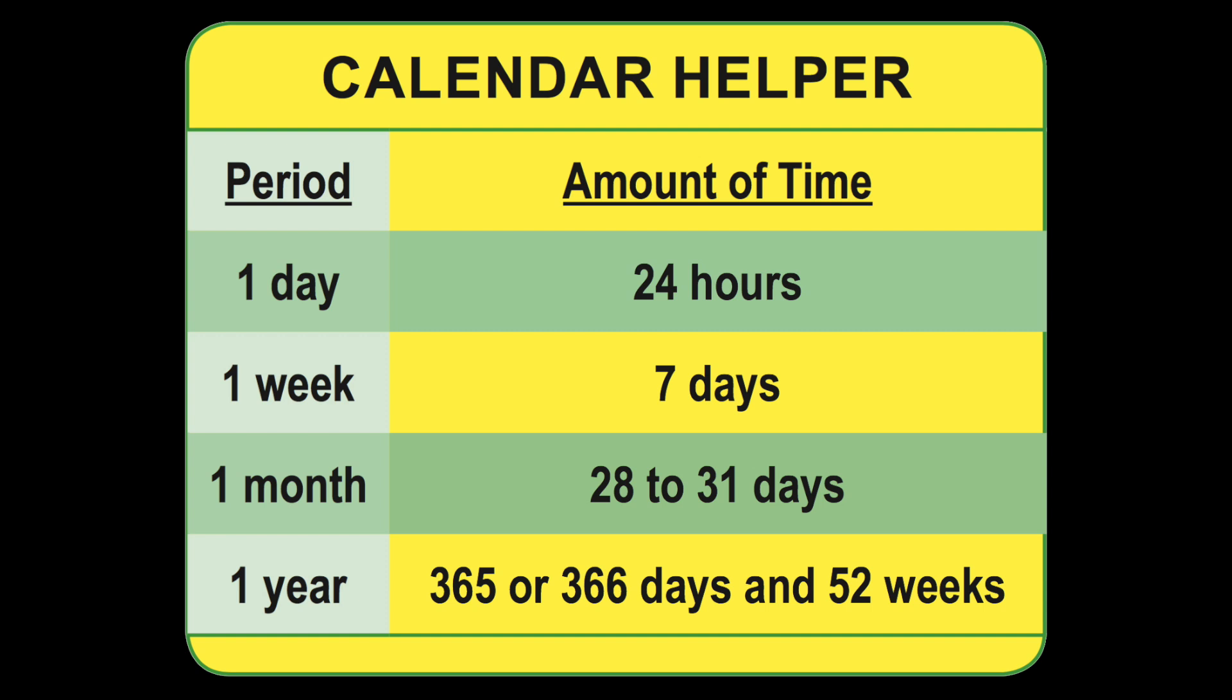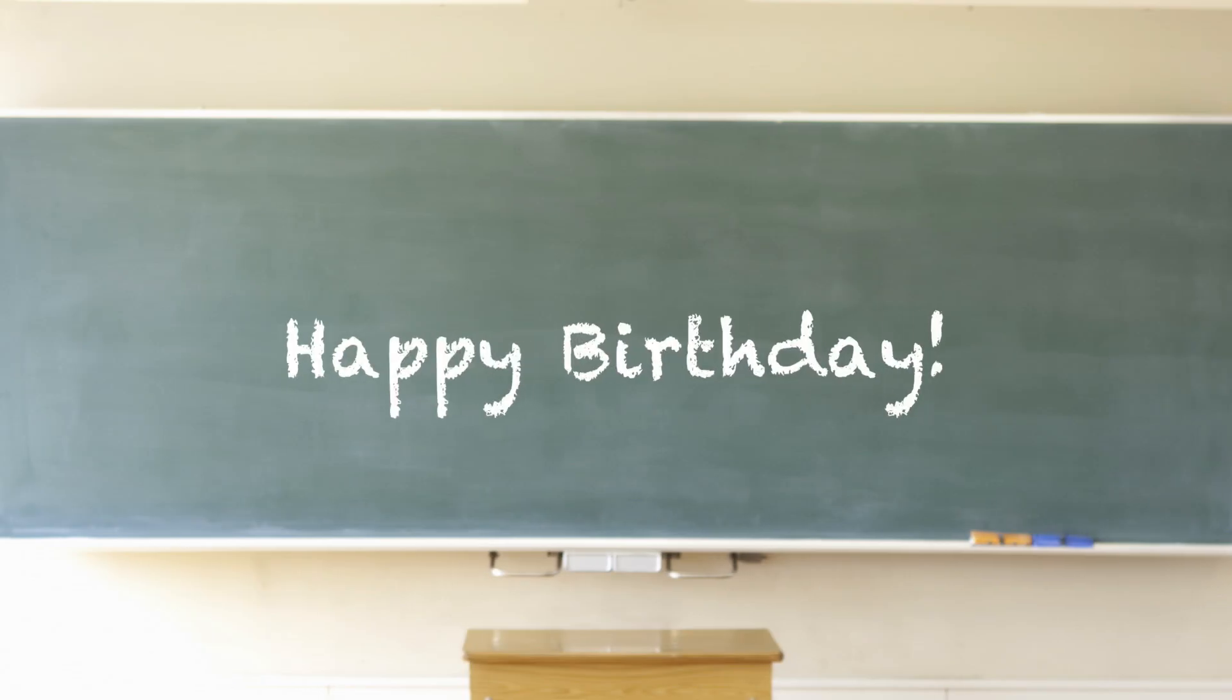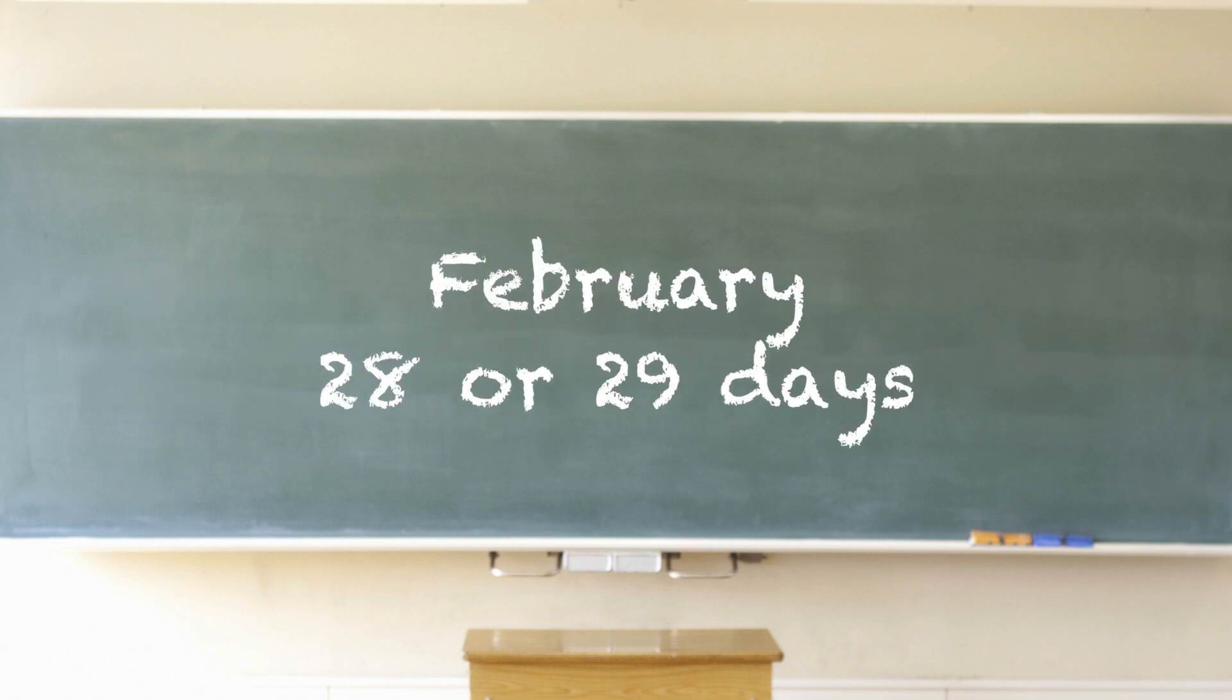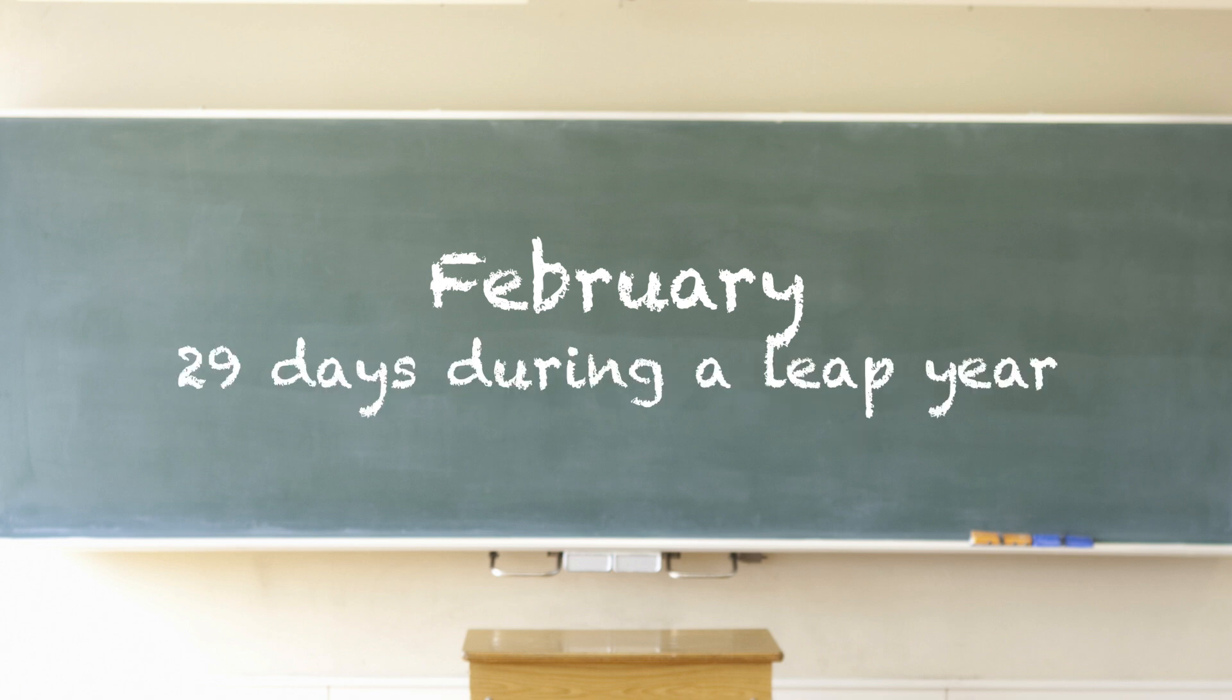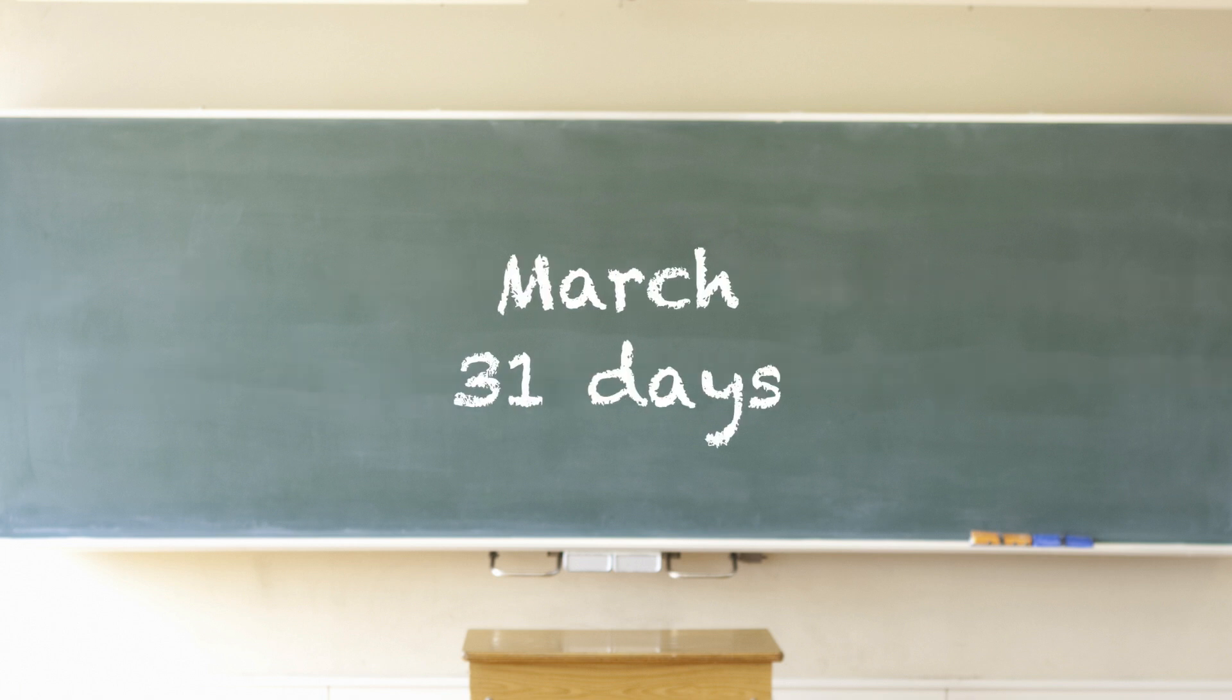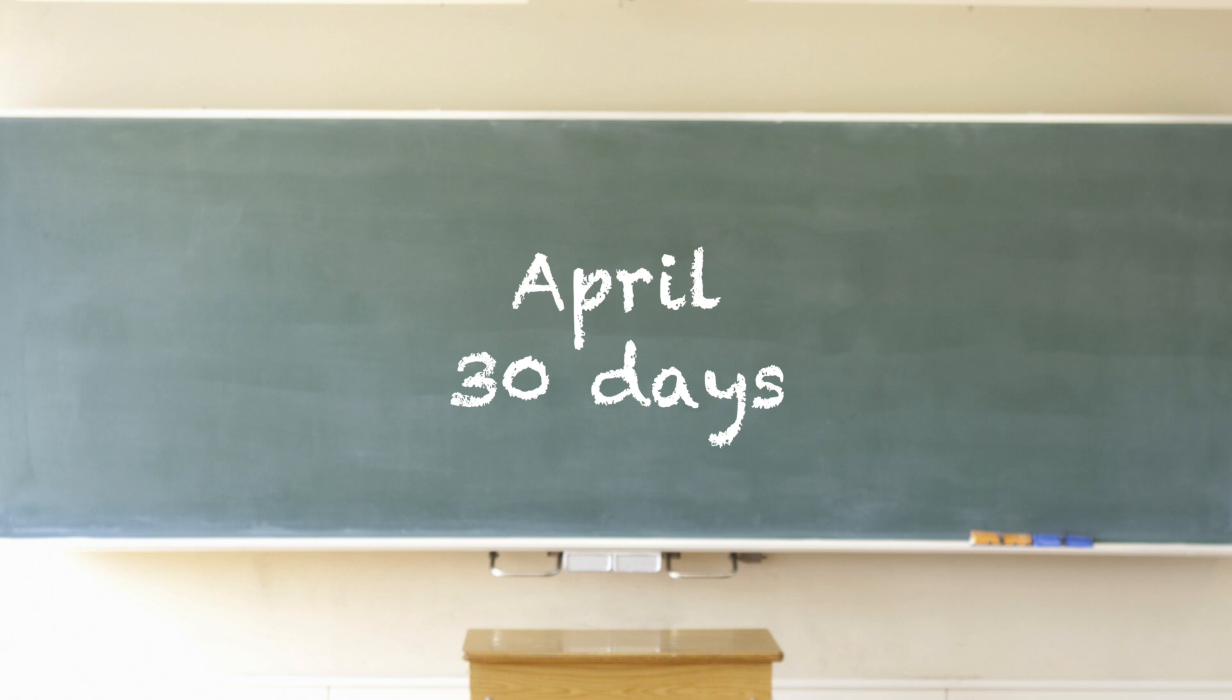You probably know the month of your birthday, but here is each month of the year and their number of days: January has 31 days, February has 28 or 29 days. February usually has 28 days but during a leap year it will have 29 days. March has 31 days, April has 30 days.